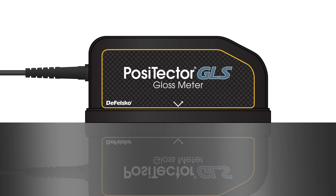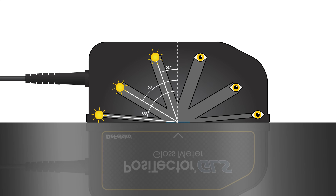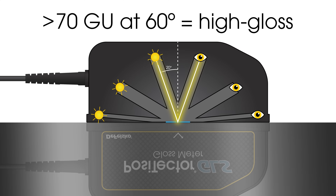Because of the vast range of gloss values, different measurement angles are used to provide the best resolution across matte, semi, and glossy samples. The 60-degree measurement angle is the recommended starting point and is used to measure many common finishes such as interior wall paints, furniture, packaging materials, and plastics. Finishes that read greater than 70 GU at the 60-degree measurement angle are considered high gloss and should be measured using a 20-degree measurement angle.